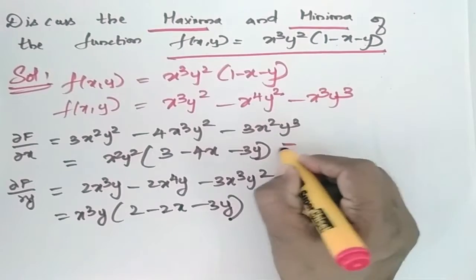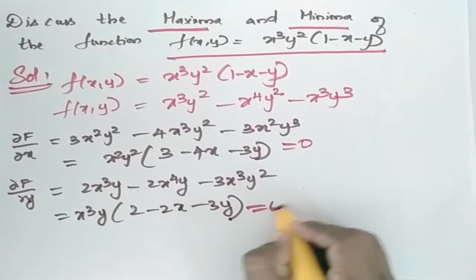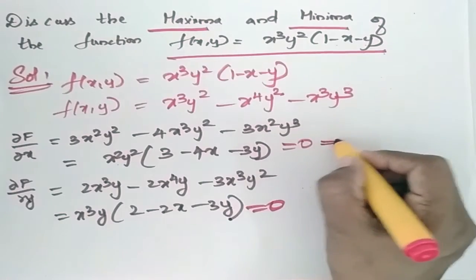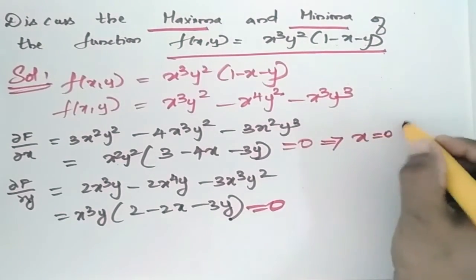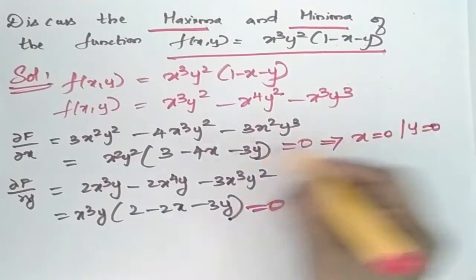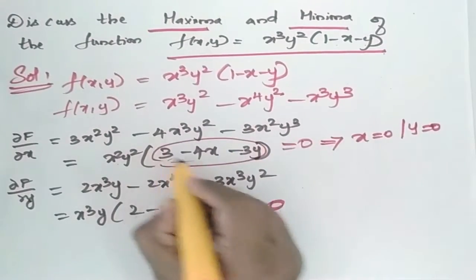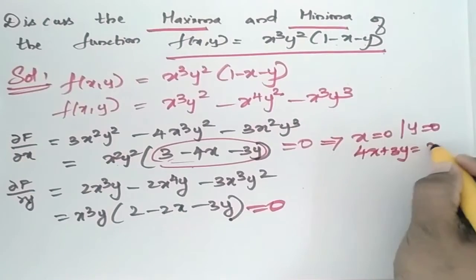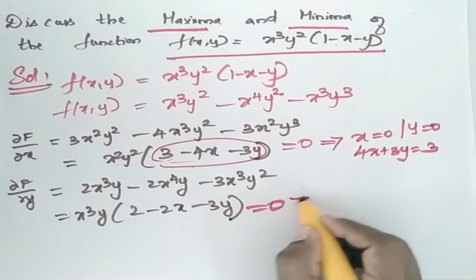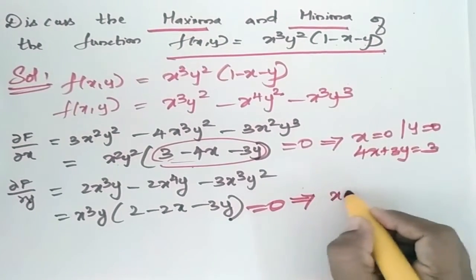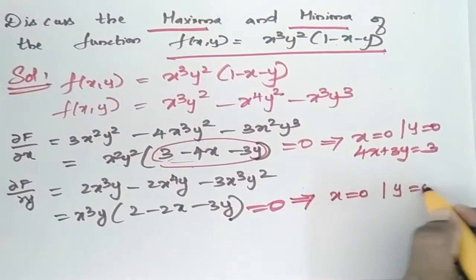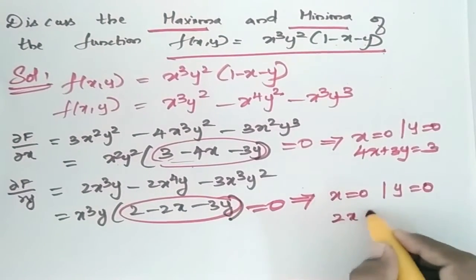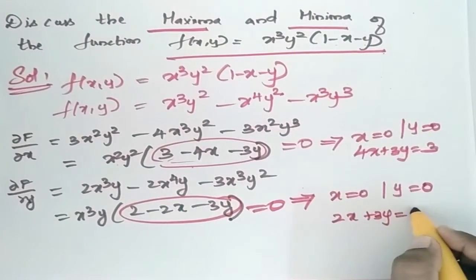Now set ∂f/∂x = 0 and ∂f/∂y = 0. From these, we get x = 0, y = 0, and the equation 4x + 3y = 3 from the first partial, and 2x + 3y = 2 from the second partial.